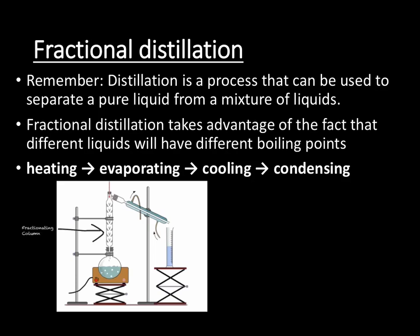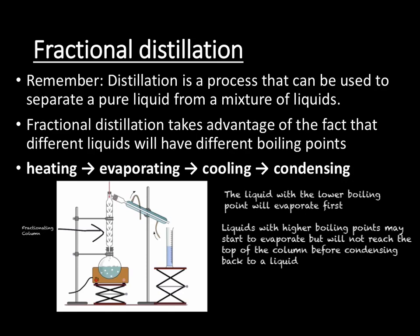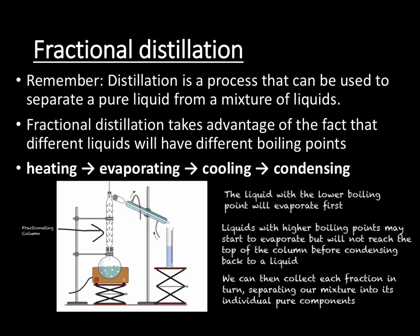The different liquids have different boiling points, so they evaporate at different temperatures. The liquid which has the lowest boiling point will evaporate first, and we will be able to take this off and condense it. Liquids with higher boiling points will also start to evaporate, but the column is cooler towards the top, so they only get part of the way up before condensing and heading back down towards the flask. When the first liquid has been collected, we raise the temperature until we can condense our second fraction, collecting each fraction in turn to separate out our mixture.